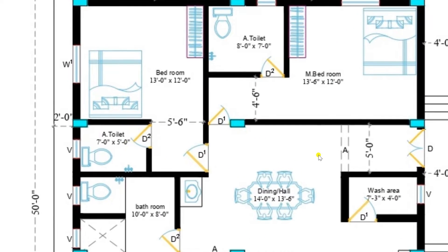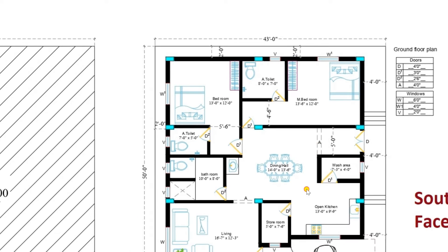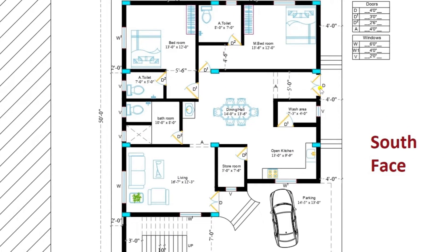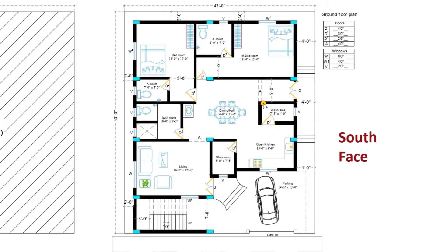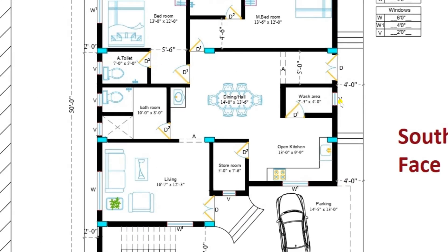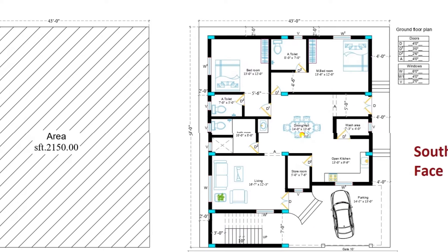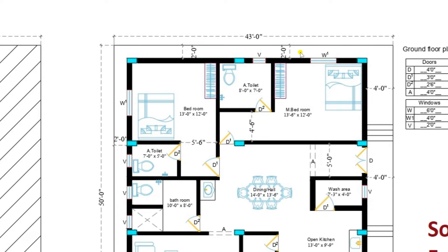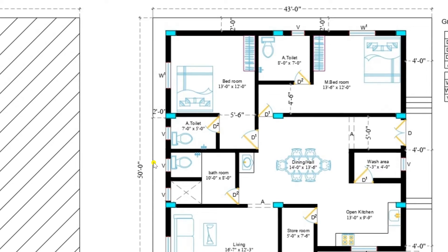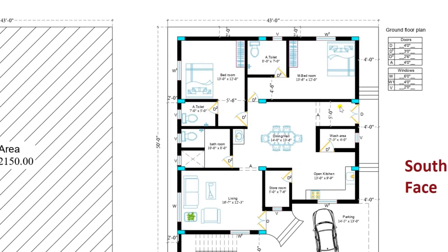Now let's move towards the open lobby. There is another arch provided here. This entrance is also accessible from here — if guests are sitting in the living room and you need to prepare something in the kitchen, you can use the lobby. It is a fully ventilated plan, with a setback of 2 feet at the back side and 2 feet on the left side as well.